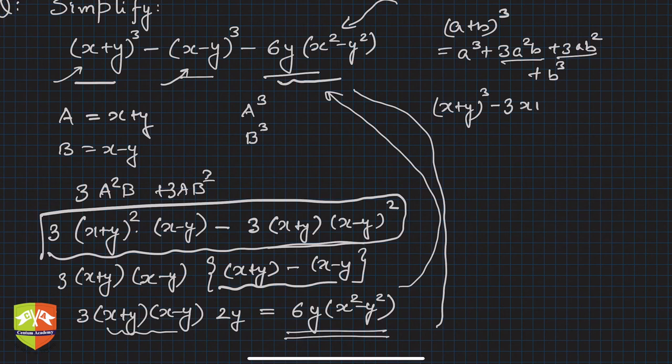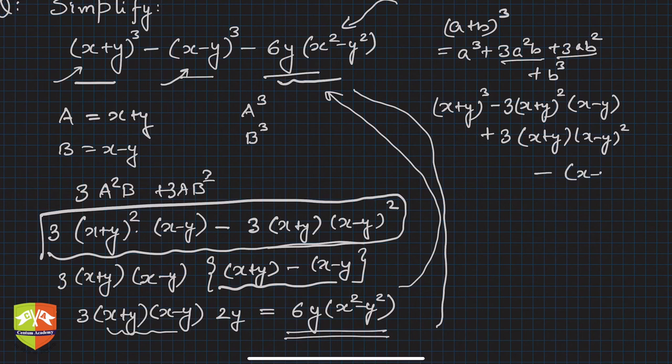Hence I can write 3(x+y)²(x-y) plus 3(x+y)(x-y)² minus (x-y)³. So this 6y(x²-y²) can be written like that.